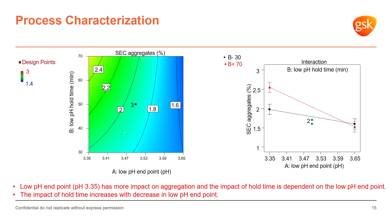You can see the relationship between the low pH endpoint and the low pH hold time. A low pH endpoint of 3.35 has more impact on aggregation, and the impact of hold time is dependent on what the endpoint of the low pH titration is. The impact of hold time increases as the low pH endpoint decreases.